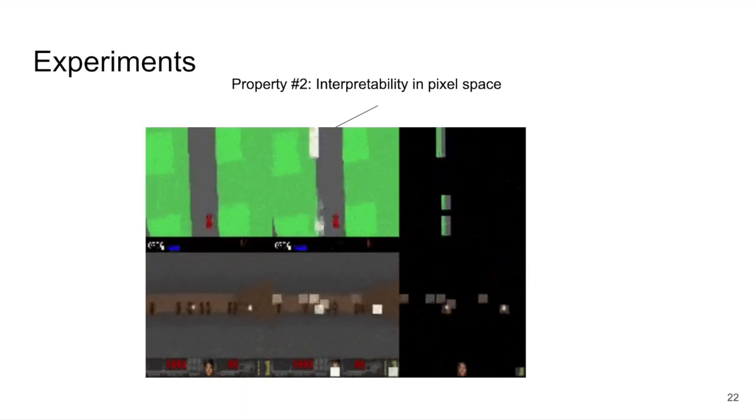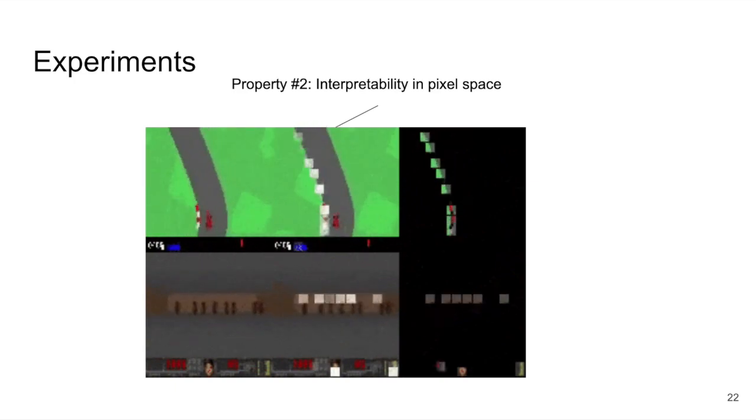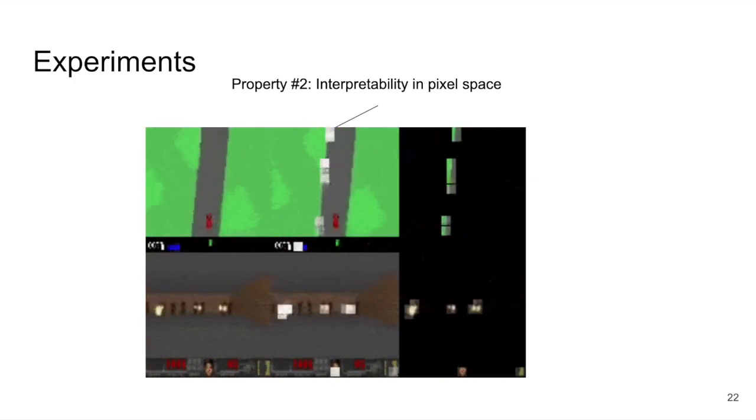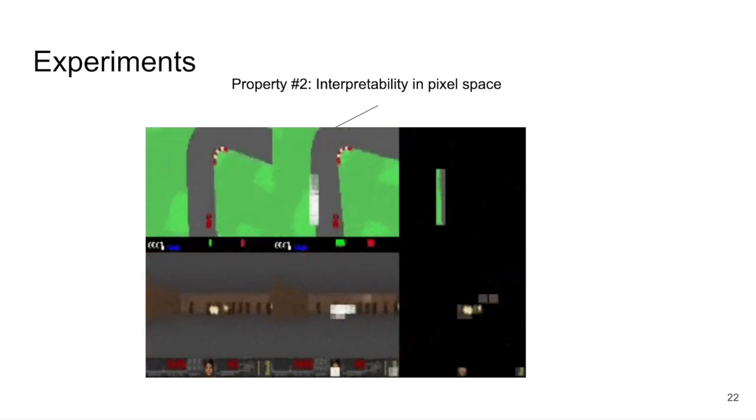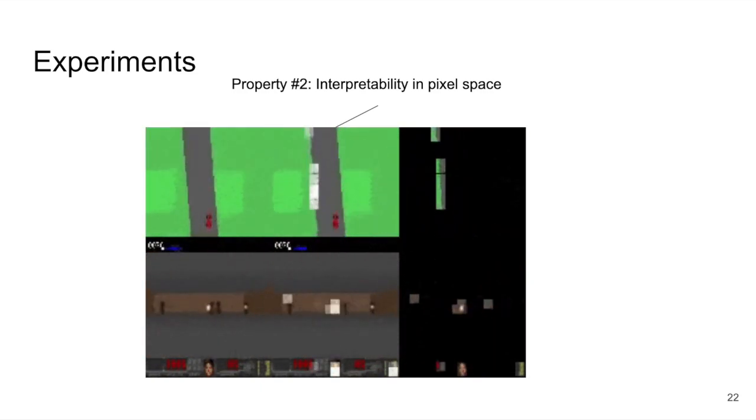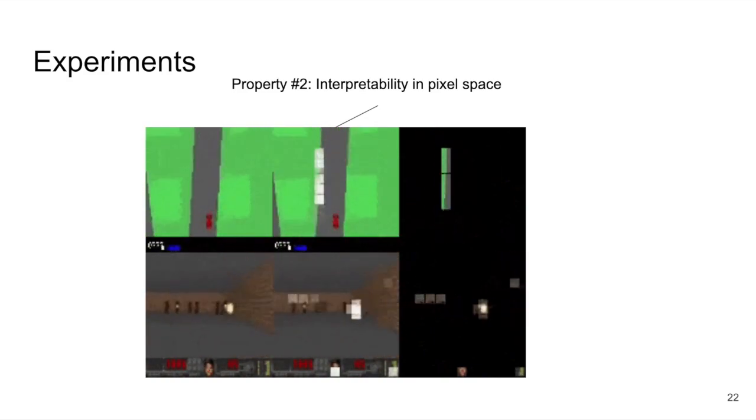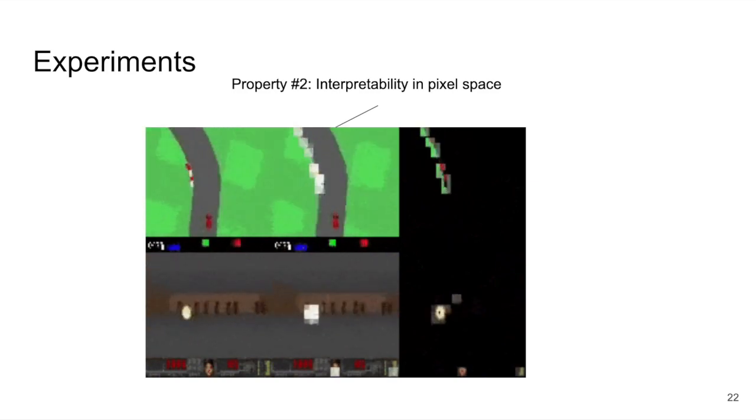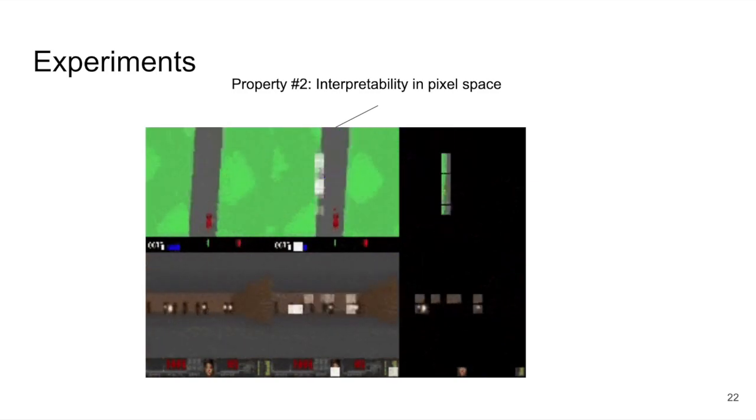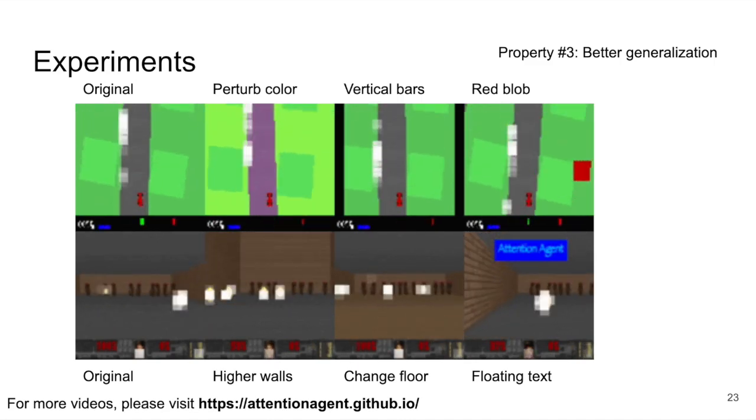Finally, in the rightmost column, we show the patches that the controller sees and upon which makes decisions. With this visualization, we conclude that attention agent possesses interpretability in terms of how a decision is made in the pixel space, and this is a byproduct from the self-attention information bottleneck. On this slide, I will discuss the results of generalization tests.